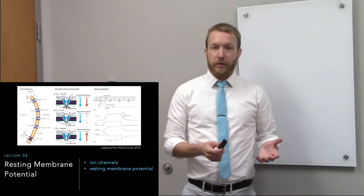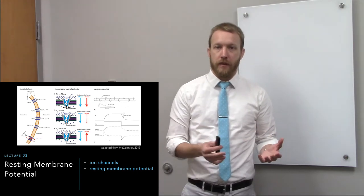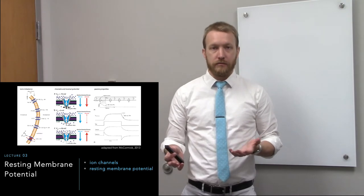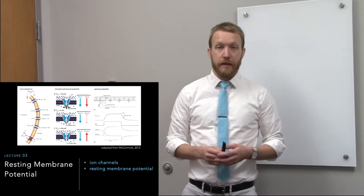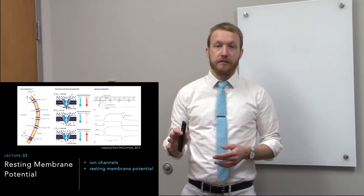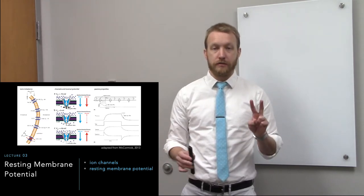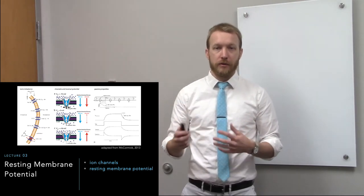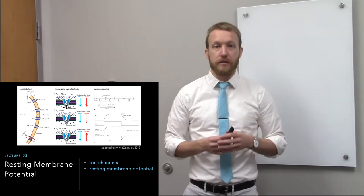Today we'll go through the resting membrane potential, assuming nothing is really happening. In the next lecture, we'll go through the action potential when neurons are no longer at rest. Following that, we'll have a lecture on neurotransmitter release and neurotransmitter receptors — two lectures for electrical signaling within neurons, and then two for the chemical signaling that leads to electrical signaling in the target cell.